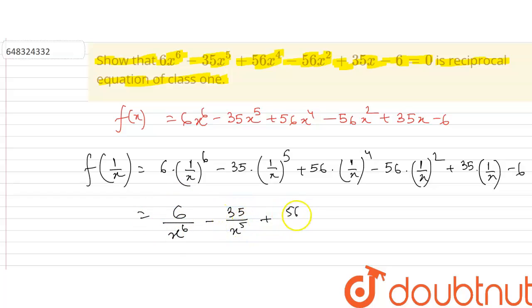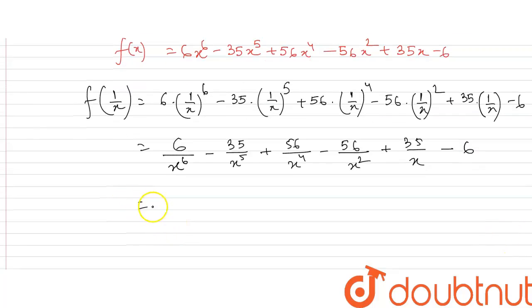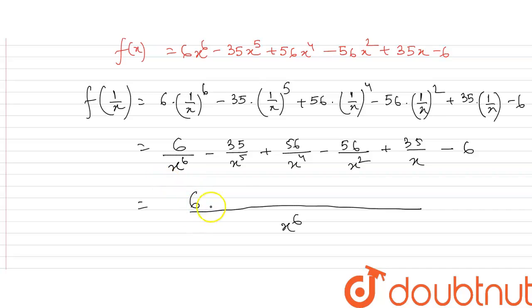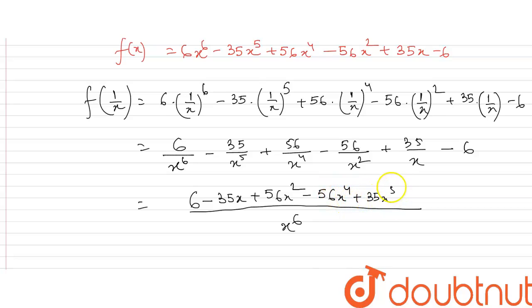So now we have to take the LCM. The LCM will be x⁶. So here we can write that is 6 minus 35x plus 56x² minus 56x⁴ plus 35x⁵ minus 6x⁶.